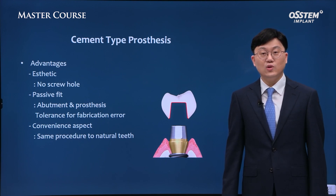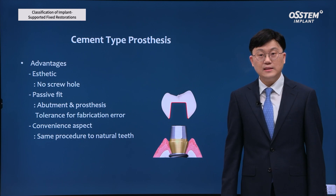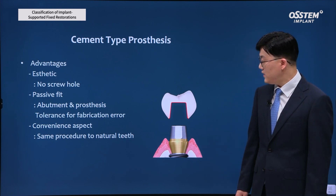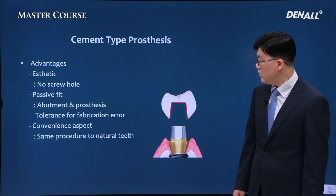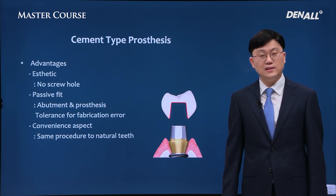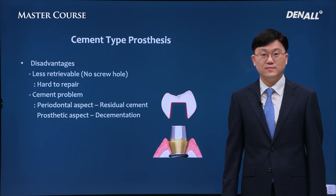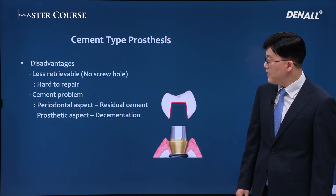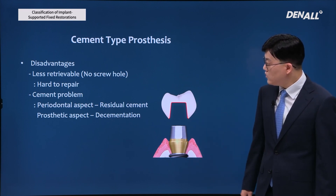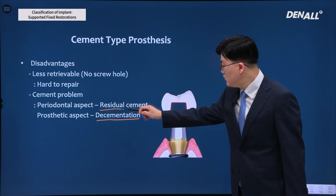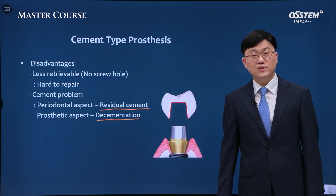On the other hand, as for cement type, there is no screw hole, so it can be used in aesthetic zones. Also, cement is used so it's easy to get passive fit, and we can fabricate and set the prosthesis in a similar way as with natural teeth, which is quite convenient. However, it is difficult to remove the crown without damaging the prosthesis. Because cement is used, there can be downsides in a prosthodontic aspect, and in a periodontal aspect, residual cement can cause periodontal issues.